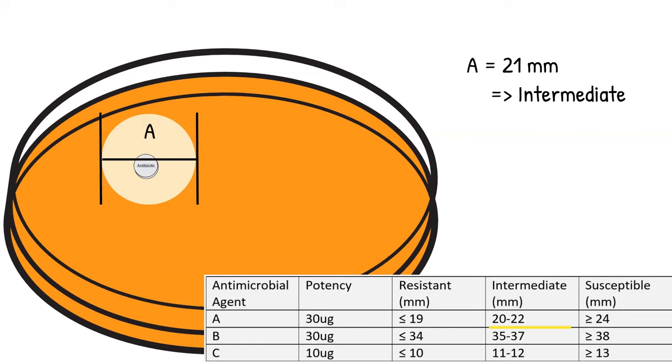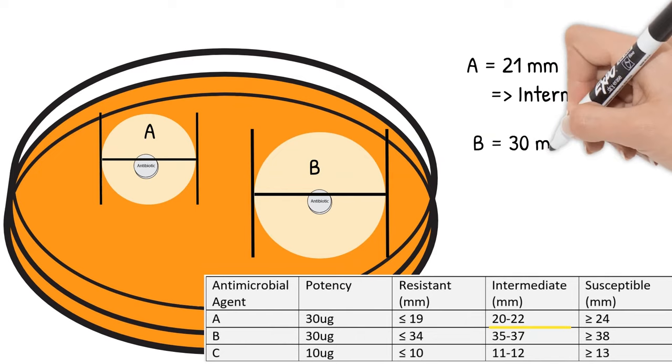Next, Disc B. It looks like it will be susceptible because the zone is quite large. However, that is a mistake. You cannot just look at it. You have to measure the zone of inhibition to know if the organism is resistant, intermediate, or susceptible.